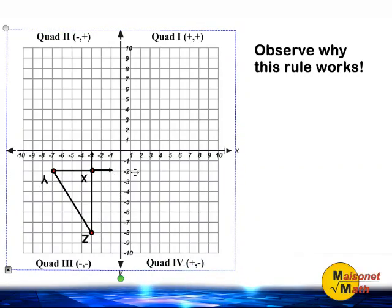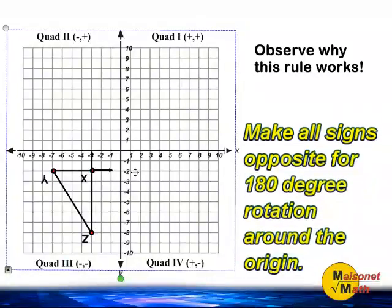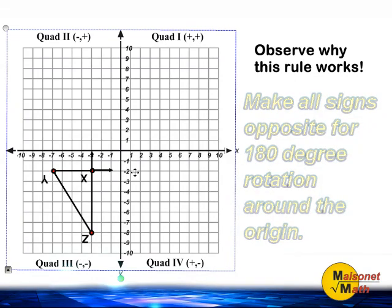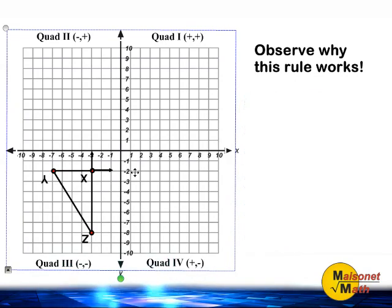So whenever you are rotating any shape 180 degrees, all you really have to do is write down the coordinates where the shape is located before you rotate the shape, and then simply write the opposite integer or change the sign of all of your numbers inside the parentheses. And that will tell you where the shape is going to end up being located after you rotate it. And we'll see you later.